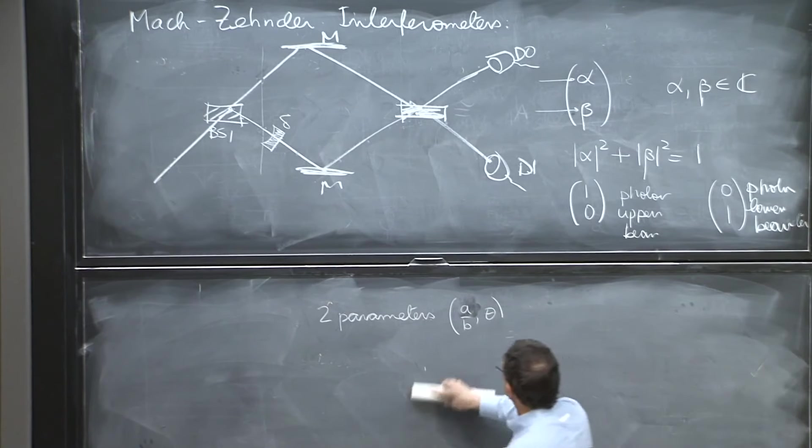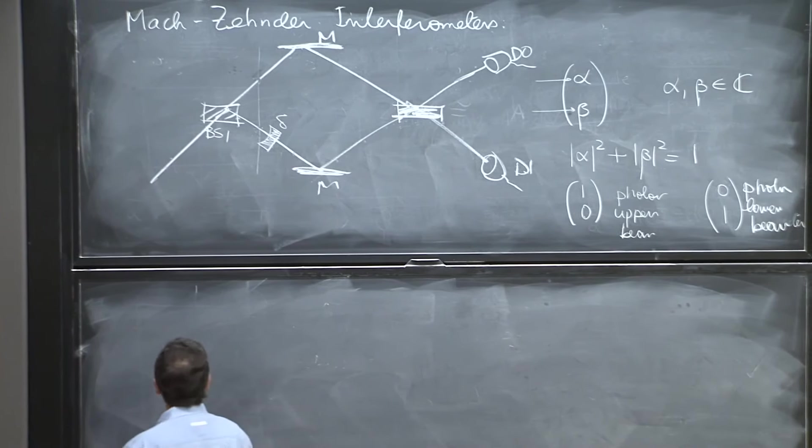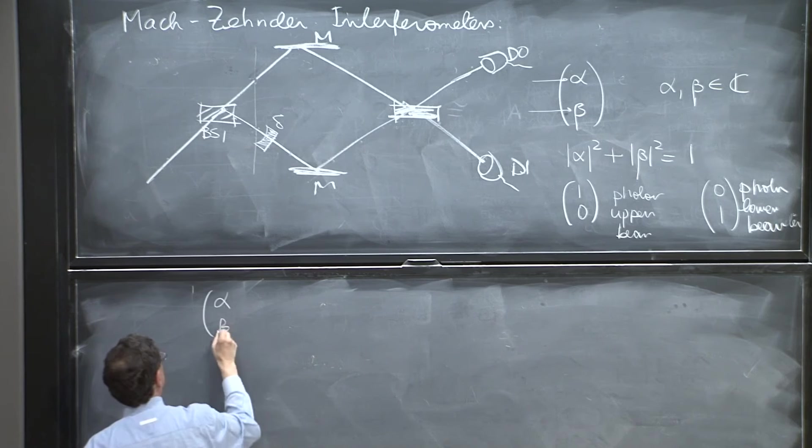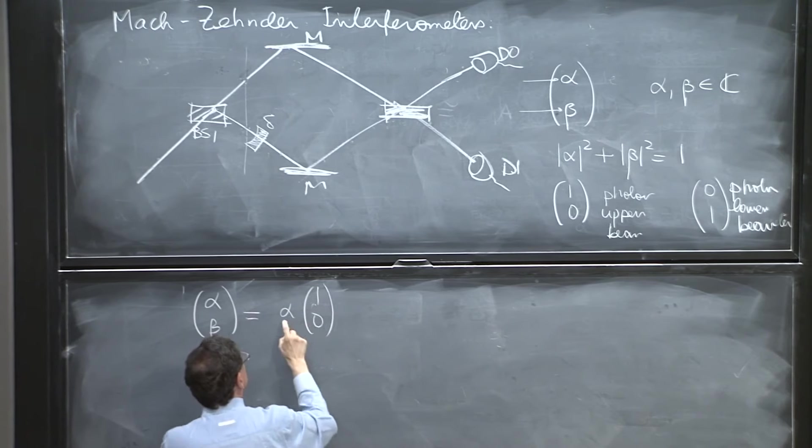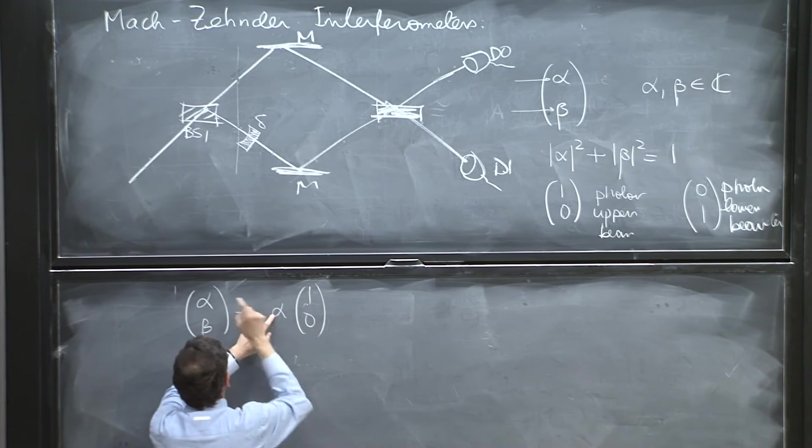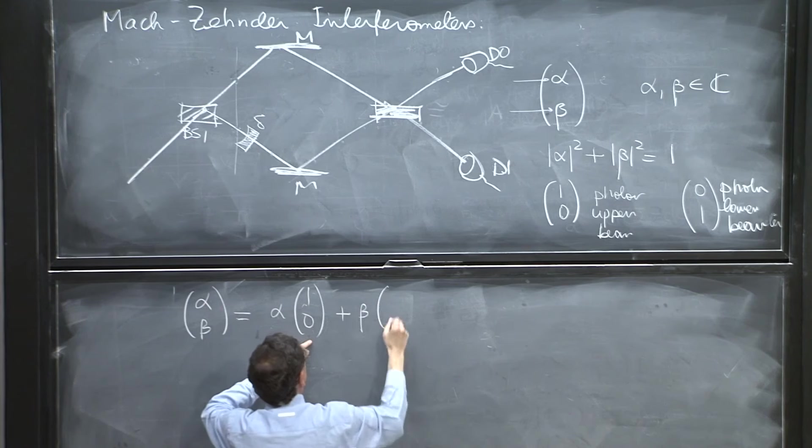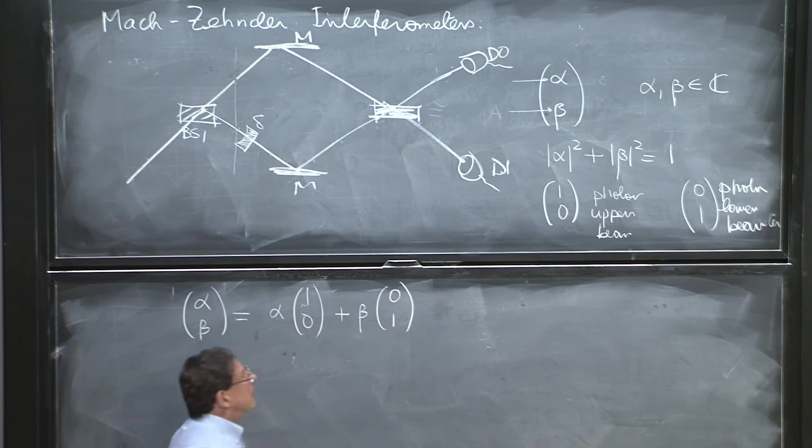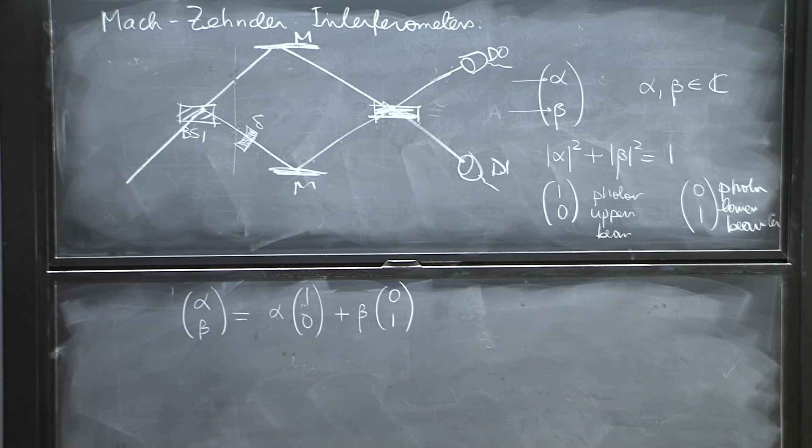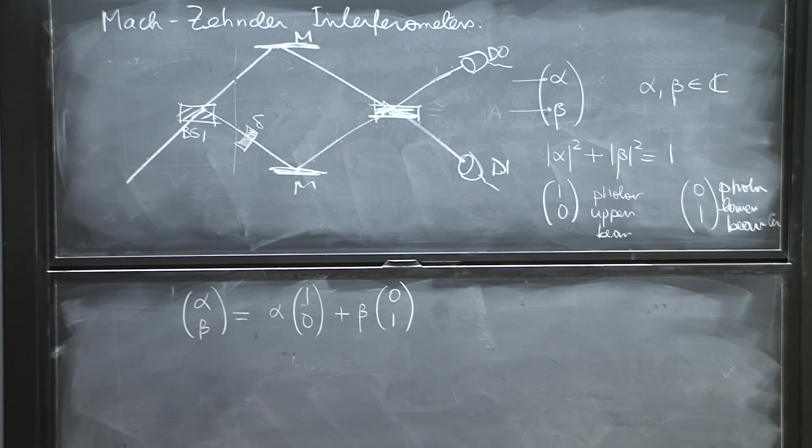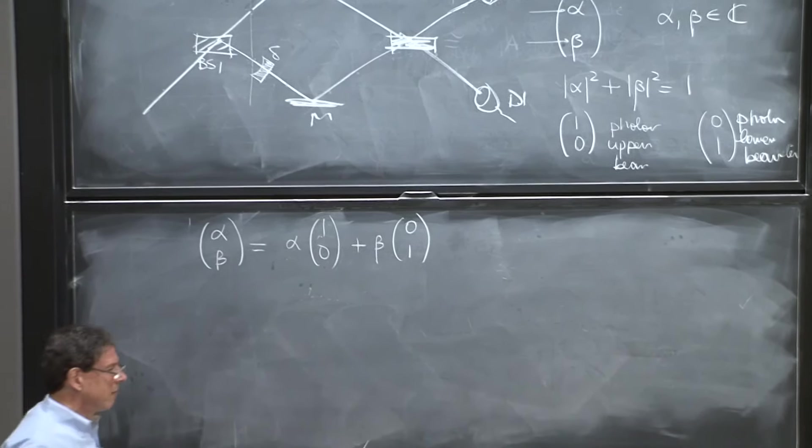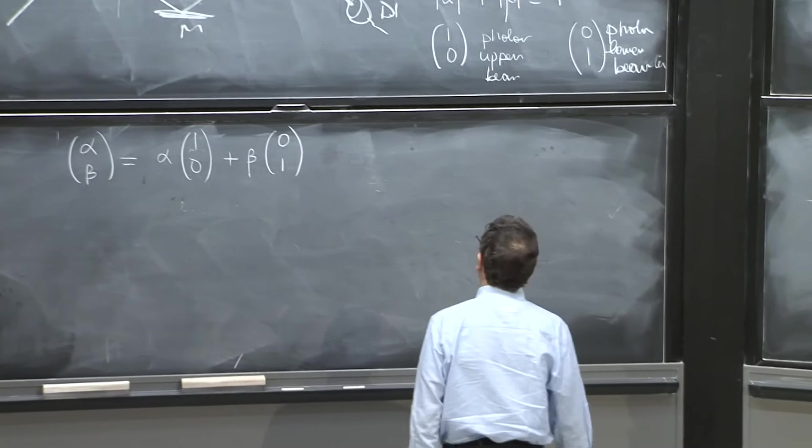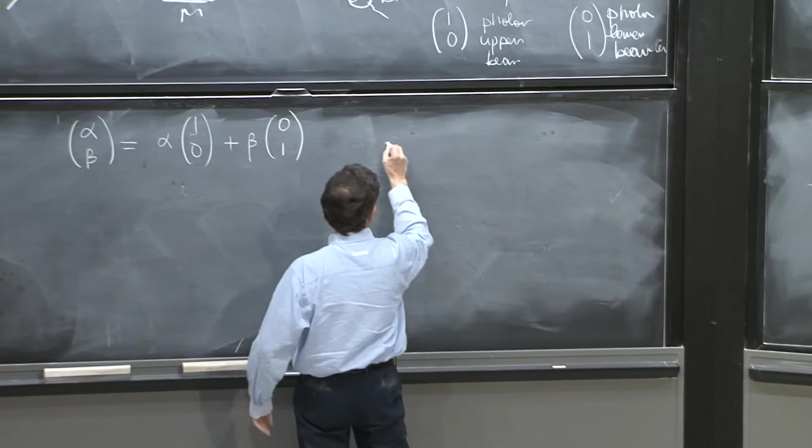And we have that the state (alpha, beta), you know how to manipulate vectors, can be written as alpha(1,0) because the number goes in and becomes (alpha,0), plus beta(0,1). So the state (alpha, beta) is a superposition with coefficient alpha of the state in the upper beam, plus a superposition with coefficient beta of the state in the lower beam.